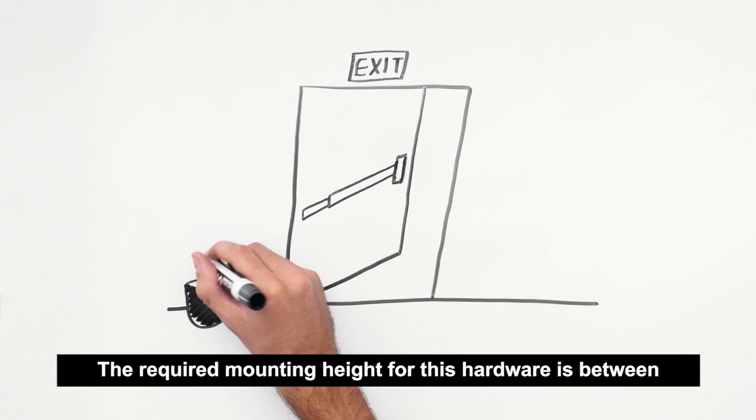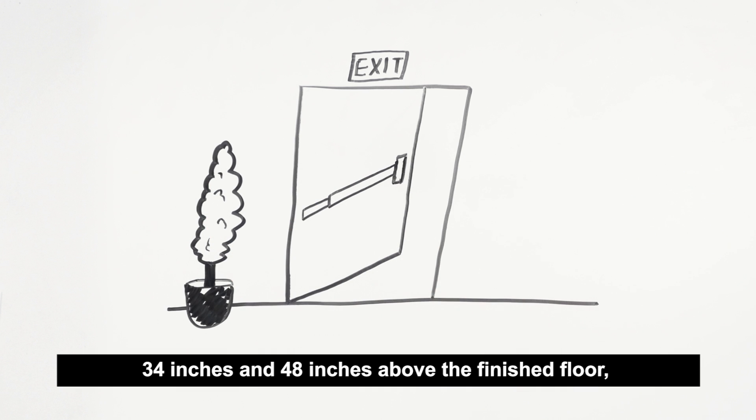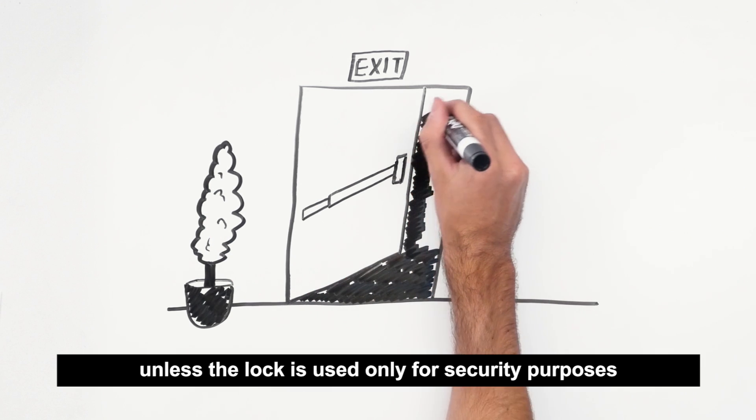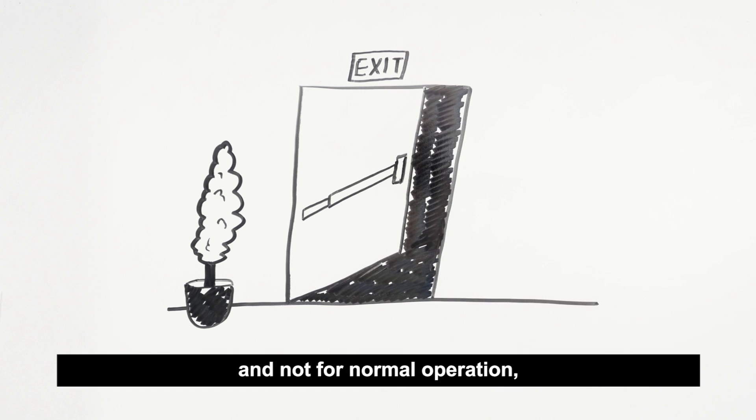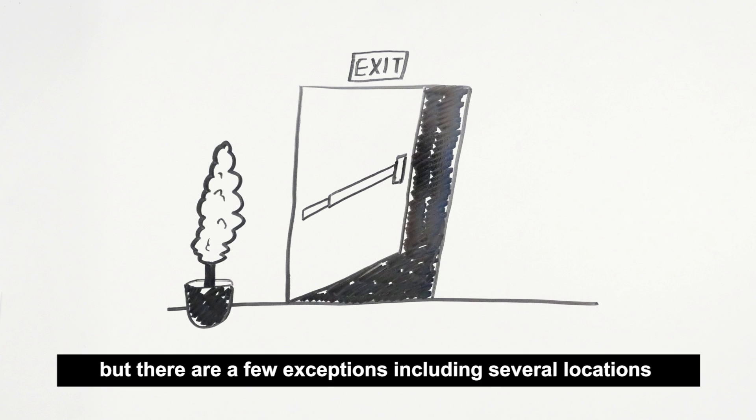The required mounting height for this hardware is between 34 inches and 48 inches above the finished floor, unless the lock is used only for security purposes and not for normal operation, or the door is part of a swimming pool enclosure. In most cases, hardware is required to allow free egress at all times, but there are a few exceptions including several locations where key operated locks can be used on the egress side of the door.